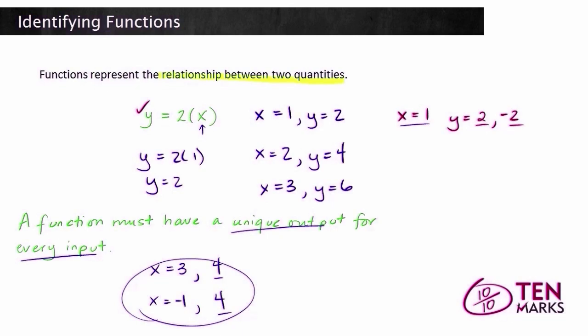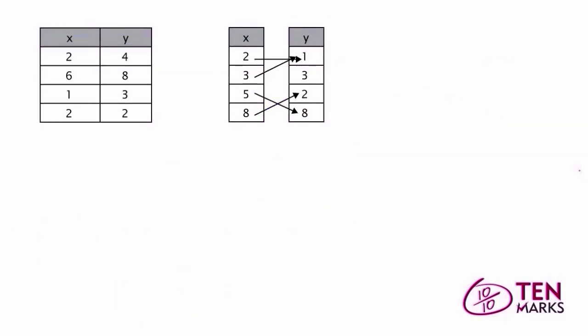Now let's practice identifying functions by looking at a list of relationships. We've got two different representations. Here in the first representation, you have an input-output table or an xy table. And here you have a mapping diagram which shows you that when x equals certain values, it'll point to the corresponding output or y value. Let's take a look at the left side first.